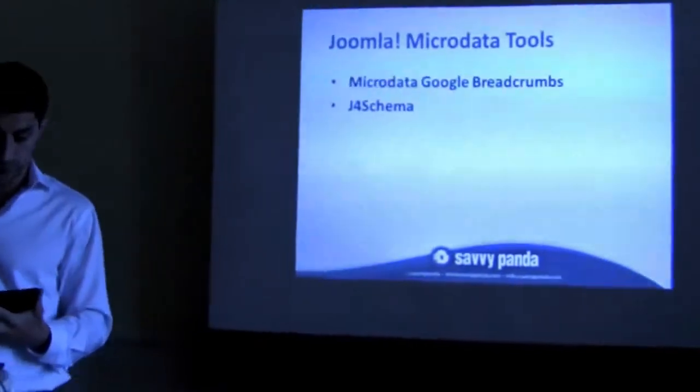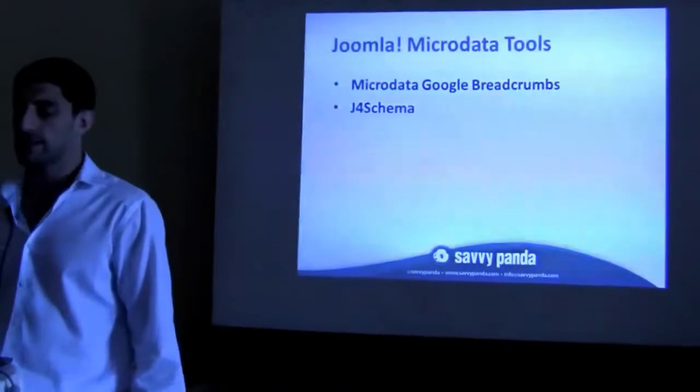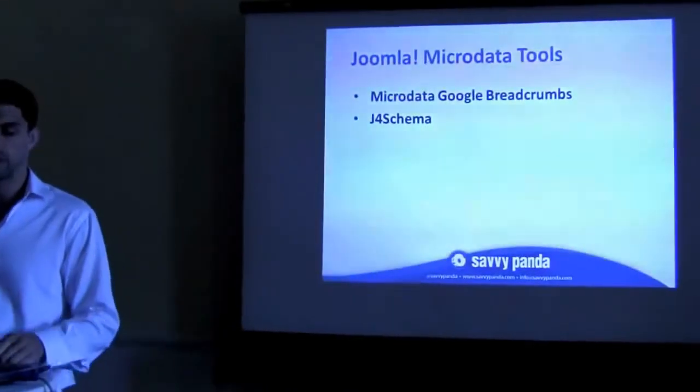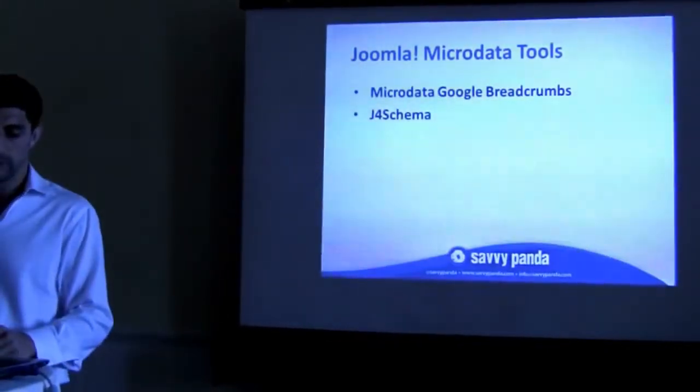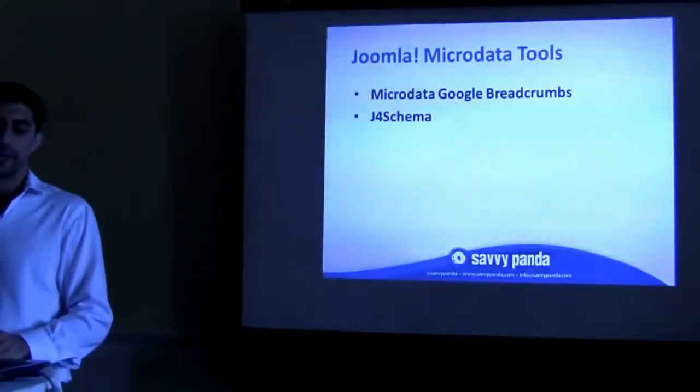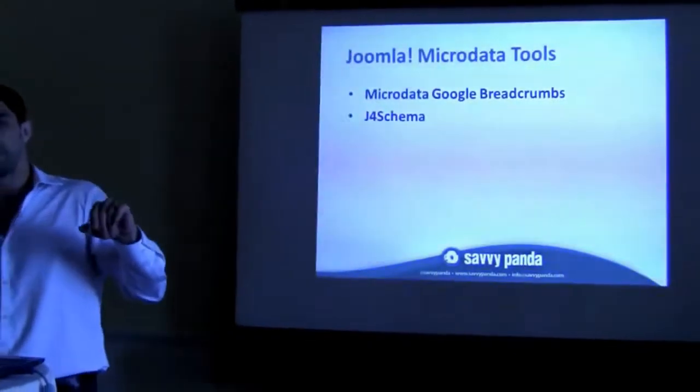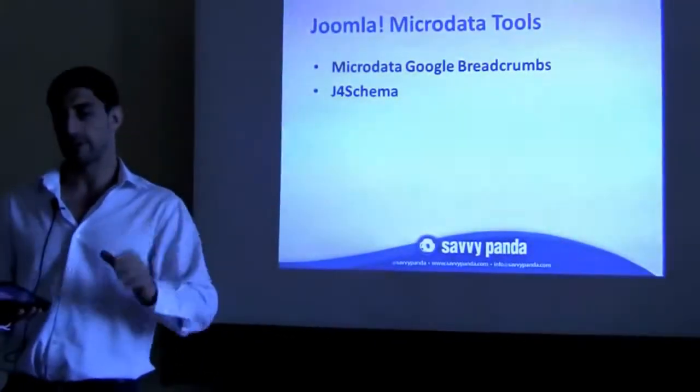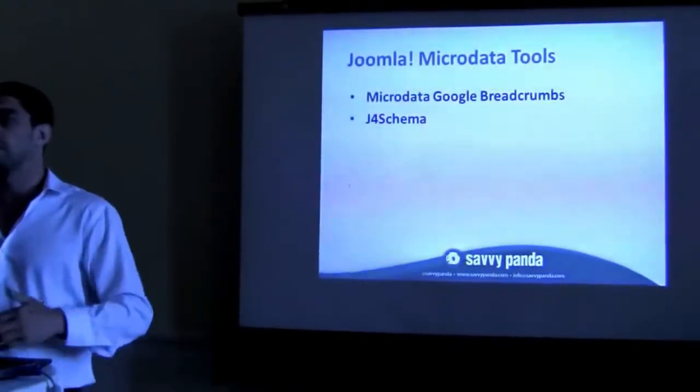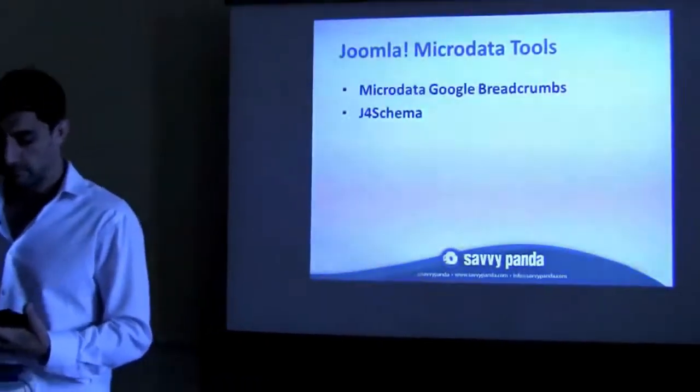A few Joomla microdata tools. There's really not much out there right now. There's some breadcrumbs for navigation, just a module. And then this is really an important one, the J4 schema. This is just an editor plugin that'll allow you to choose your tags. It has everything you need in there. All the available data types, you can choose your data type, each of the properties, and insert your microdata without having to know it by hand. So it's just a little helpful additional item.